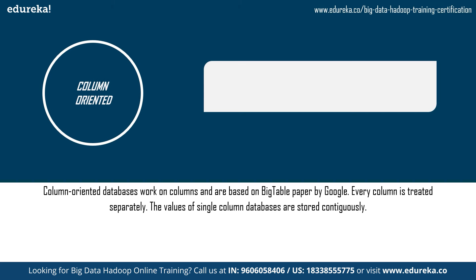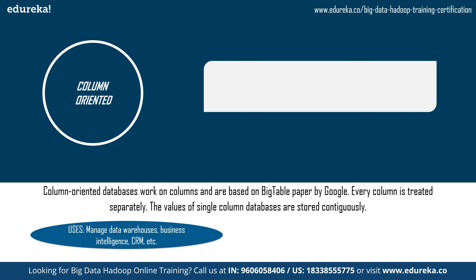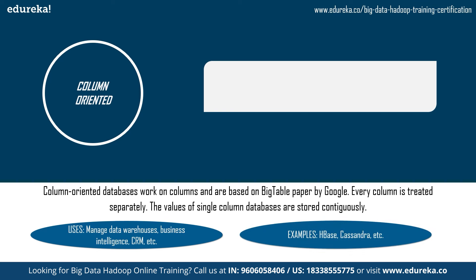Column-oriented databases work on columns where each column is treated separately and the values of a single column are stored contiguously. These databases are used to manage data warehouses, business intelligence, CRM, and library card catalogs. Some column-oriented NoSQL databases include HBase and Cassandra, and these databases are based on the BigTable paper by Google.